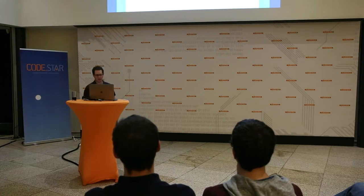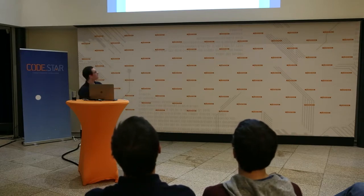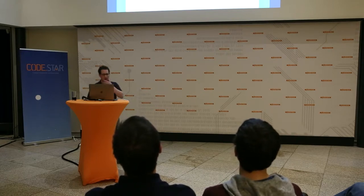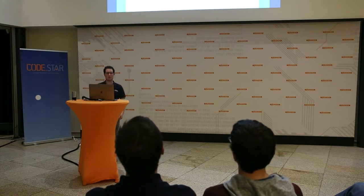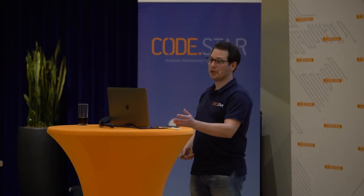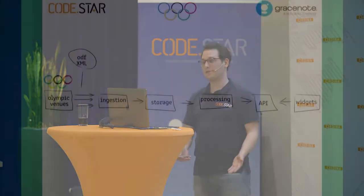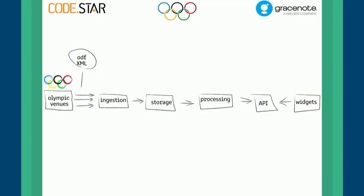In a very basic way, we get the XML from the Olympic venues, which we ingest, put somewhere in storage, process the files, and put them ready for an API to leverage, which widgets can pull — and then those widgets will be embedded on a client's website.